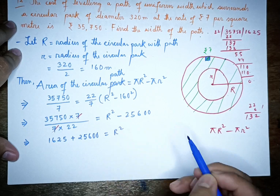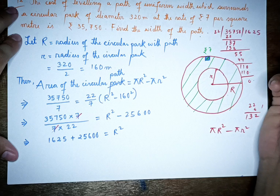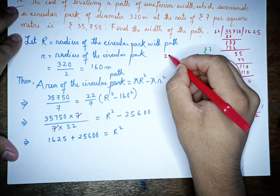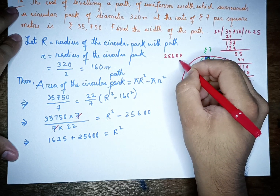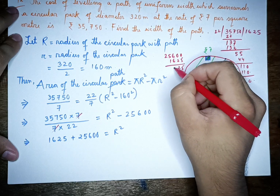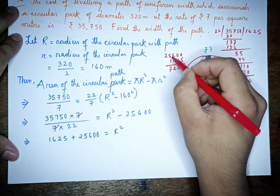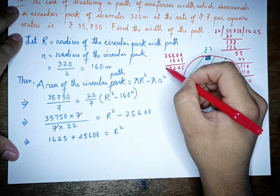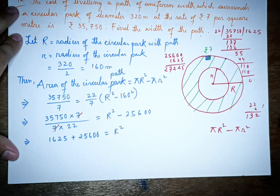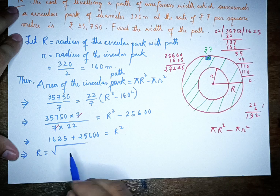So R² = 27,225. Therefore R = √27,225. Let's compute: 165² = 27,225 — we can verify: 1 × 1 = 1, 6 × 6 = 36, 5 × 5 = 25, working out to 165 × 165 = 27,225.